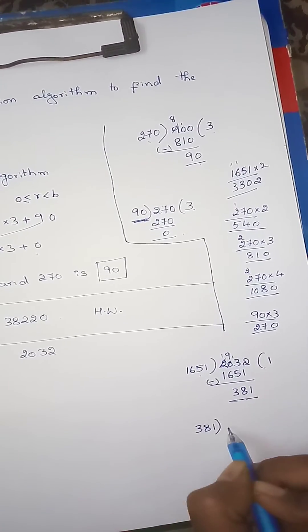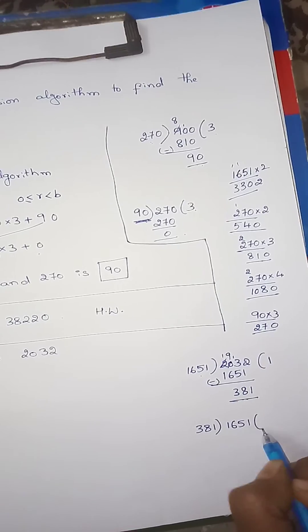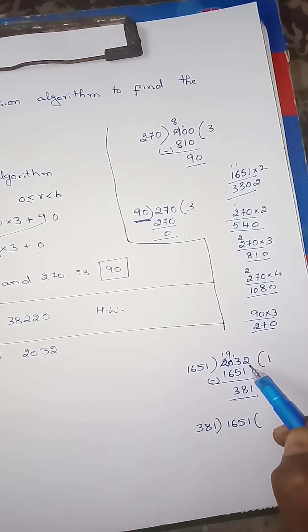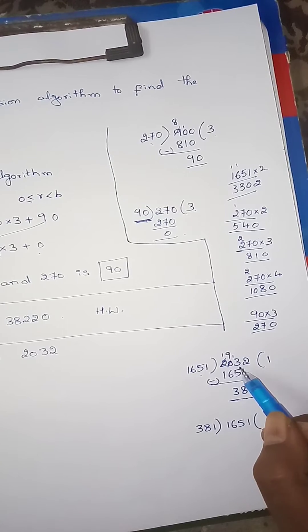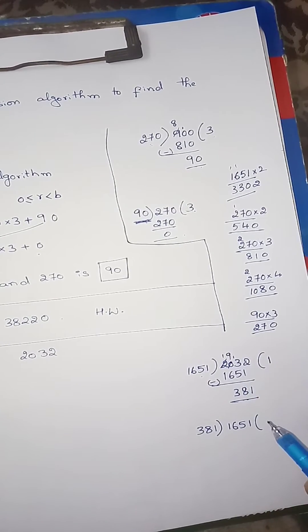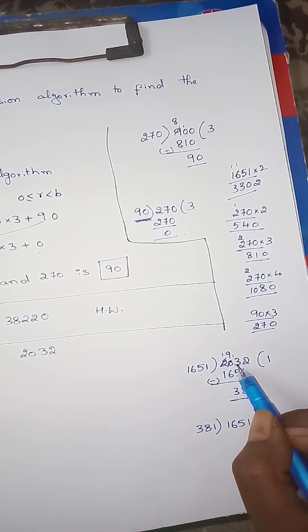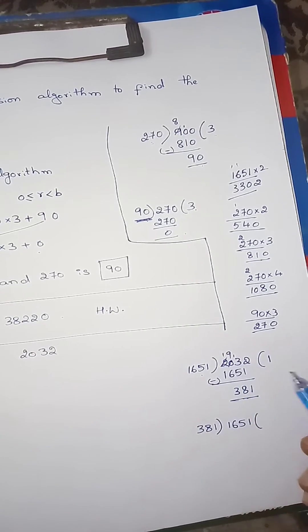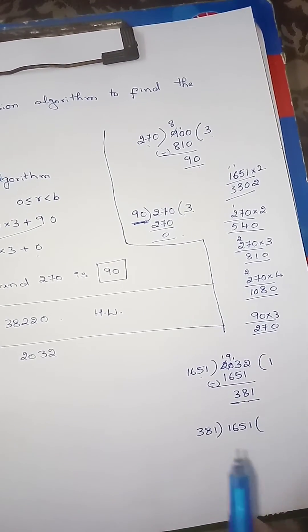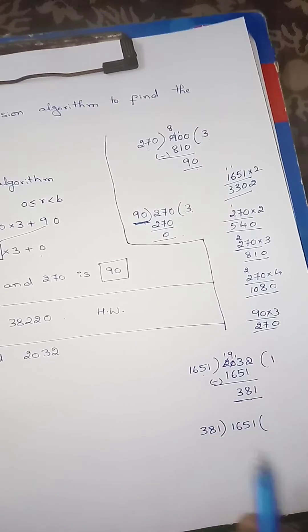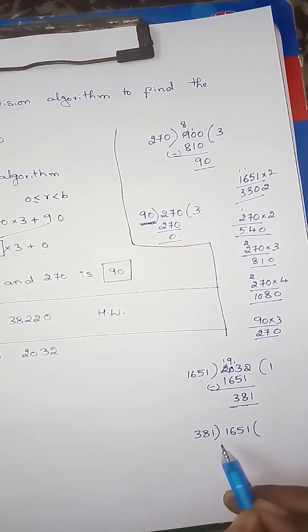Next: 1651 divided by 381. Working through subtraction to check: 1, 13, 5, 6, 7, 8, 9, 6, 8, 3, 8, 1, 0. Now we will continue with 381.